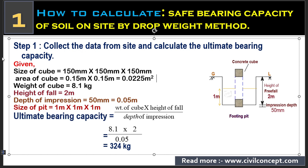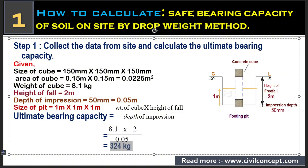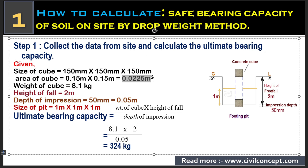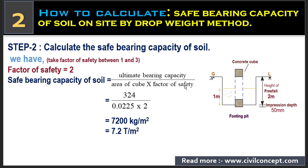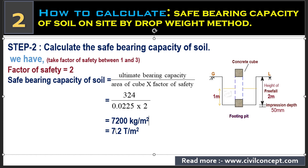Now to calculate safe bearing capacity of the soil: ultimate bearing capacity is 324 kg, area of the cube is 0.0225 m², and we take a factor of safety of 2. Putting in all these values we get approximately 7,200 kg/m². Converting to tonnes by dividing by 1,000, we get 2.2 tonnes per m².